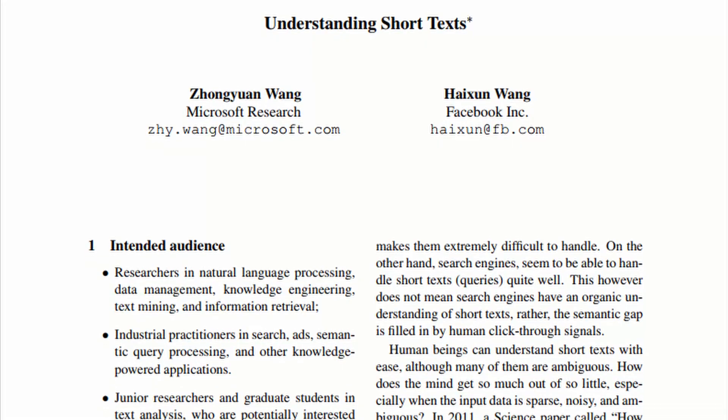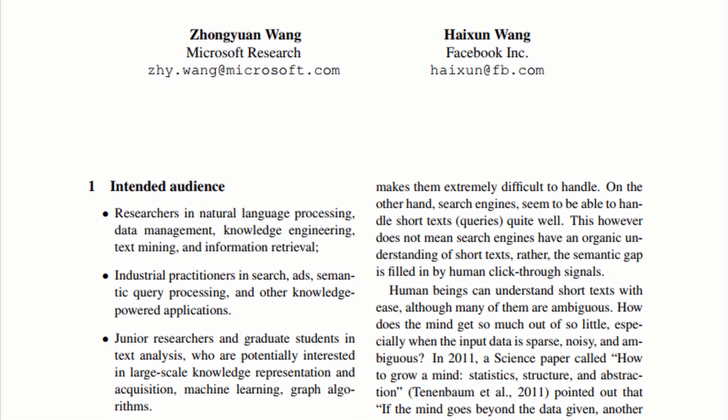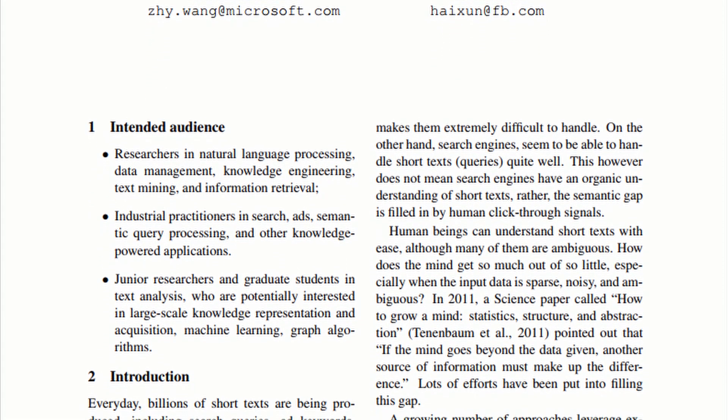The problem I had to tackle a few months ago had to do with very short pieces of text, basically sentences in the form of questions. The keywords I was trying to extract only appeared once in the sentence, which makes it very difficult to identify them. After trying out the three algorithms I just mentioned, I found out that keyword extraction on short text is actually a well-known problem.